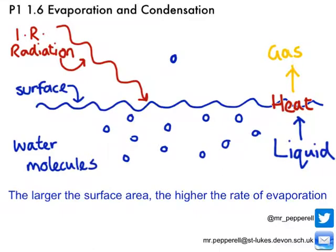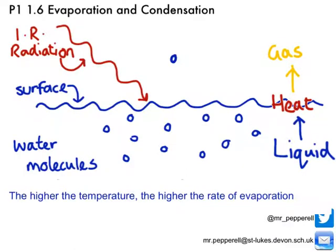If the puddle is heated to a higher temperature — if more infrared radiation falls on it — the particles gain more energy and are going to escape more readily. So the second thing that can affect the rate of evaporation is temperature: the higher the temperature, the higher the rate of evaporation.